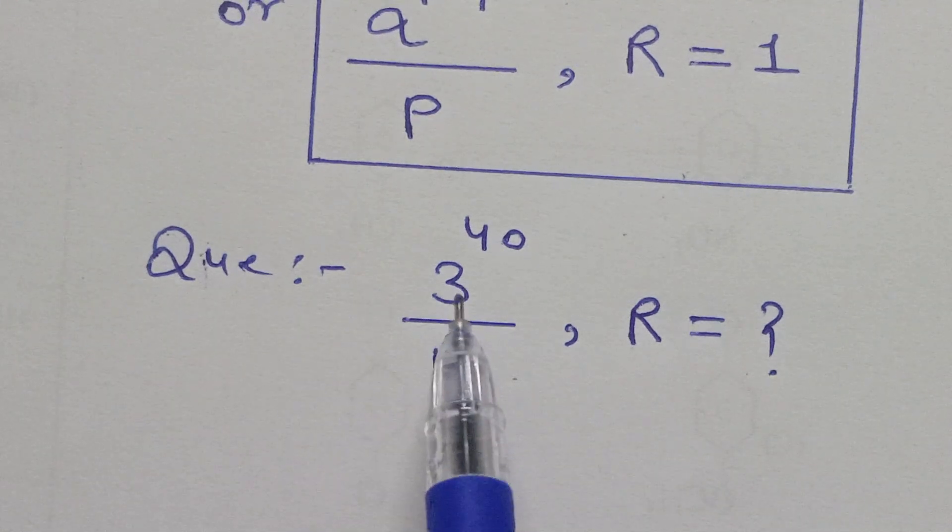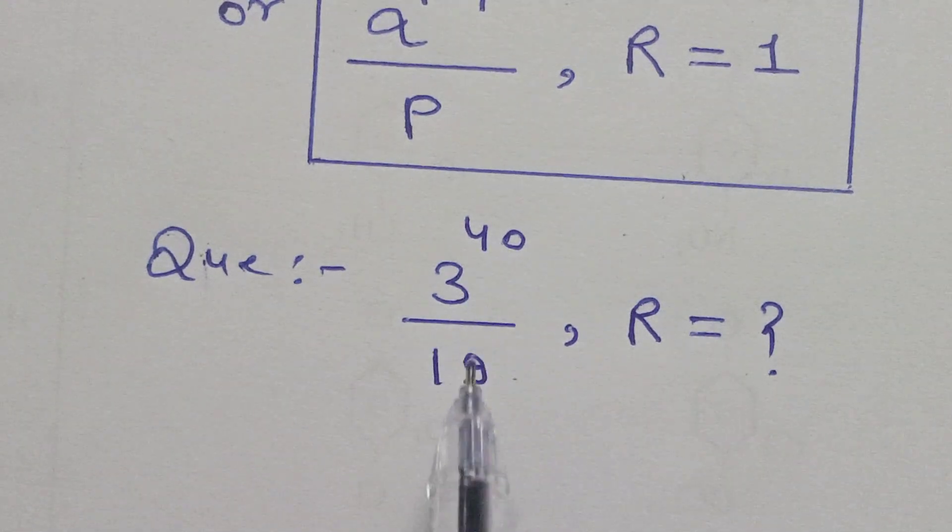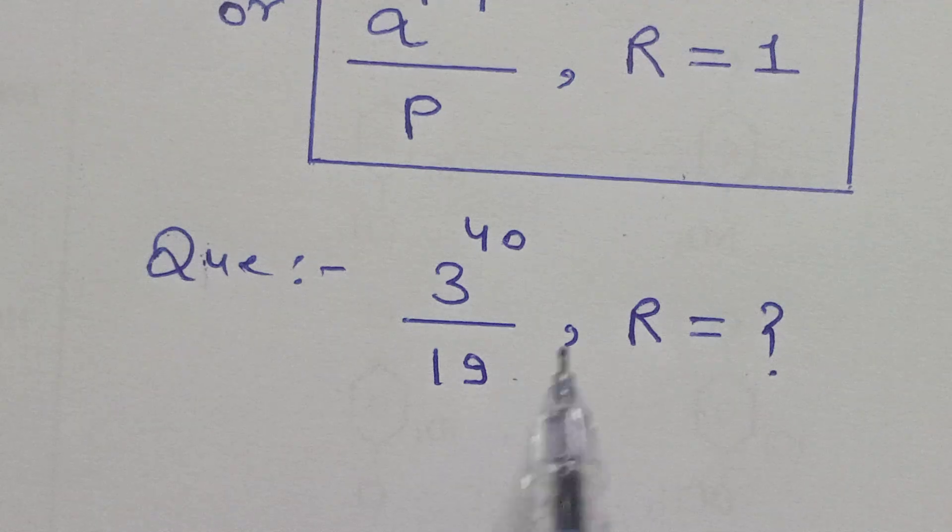Hello everyone, the question is: 3 to the power 40 is divided by 19, then what is the remainder? First we know what is Fermat's theorem, then we solve the question.